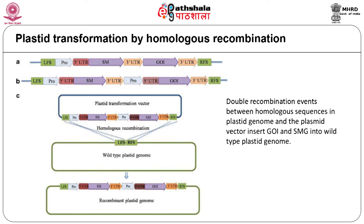Insertion of the gene of interest and the selectable marker occurs through homologous recombination taking place at the flanking sequences. Double recombination is required to insert only the desired sequence and not the entire vector. The selectable marker genes are dominant markers, which are important in selection of transformants in the polyploid plastome, since they have an effect at early stages during selection even though they may only be present in a minority of the plastomes.